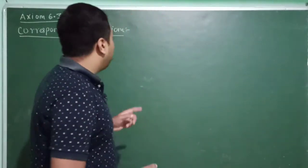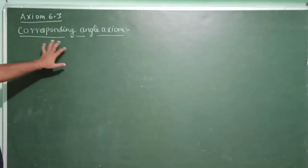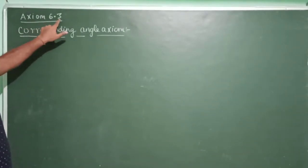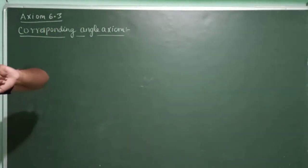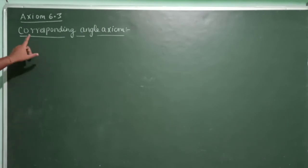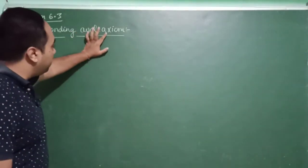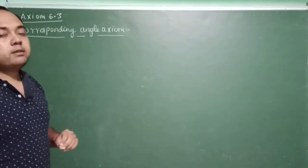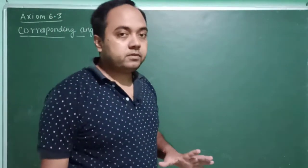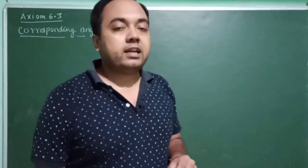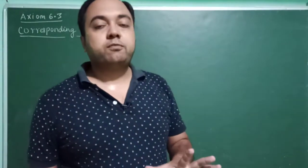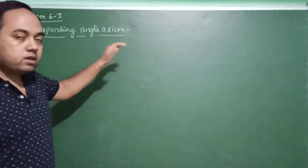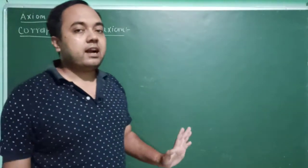What is Corresponding Angle Axiom? In your NCERT Maths book, it is given as Axiom 6.3, on page 99. What is an axiom? Axioms are basic statements which are taken for granted without any proof. Whatever statement is given, there is no proof — it will be granted.